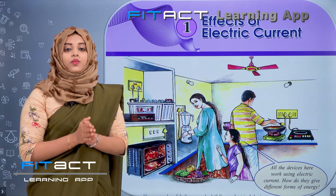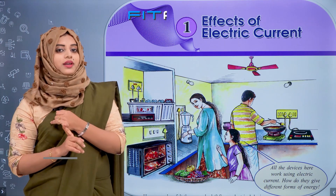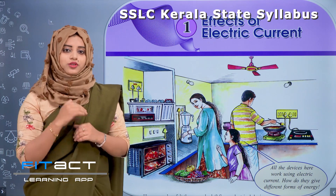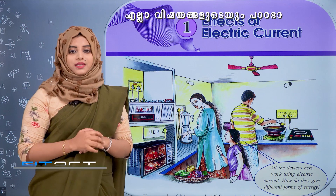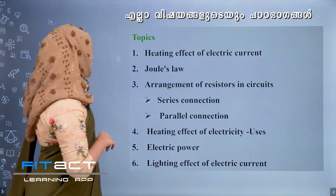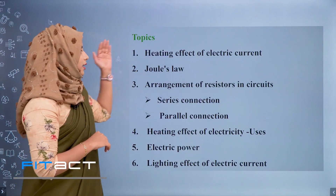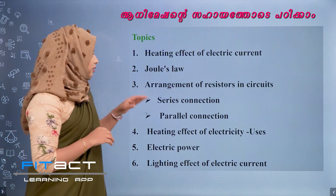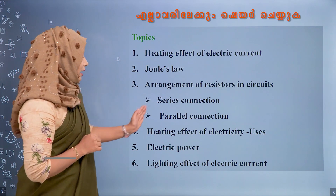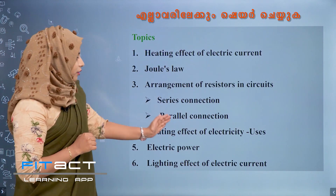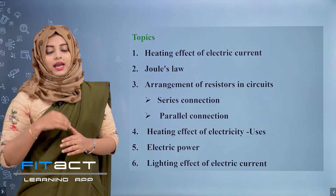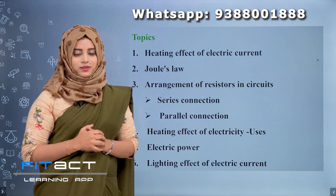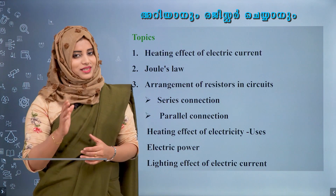In this chapter, we discuss the heating effect and lighting effect of electricity and the laws related to them. The main topics in this chapter are: heating effect of electric current, Joule's law, arrangement of resistors in a circuit — series connection and parallel connection — heating effect uses, electric power, and lighting effect of electric current.